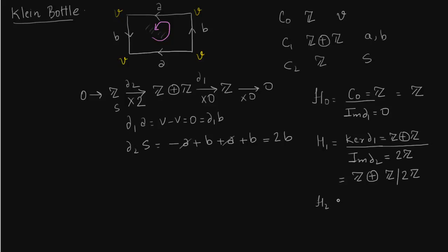What about H2? We have to only worry about kernel of delta 2. Kernel of delta 2 is 0 because it is an injective map, it is multiplication by 2. So what we get is 0. We don't have to worry about whatever image of delta 3 might be. Anyway, in this case the image of delta 3 is also 0, since we do not have 3 or higher cells.